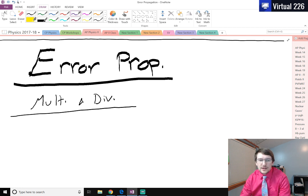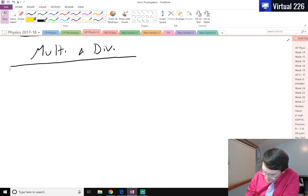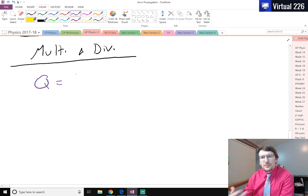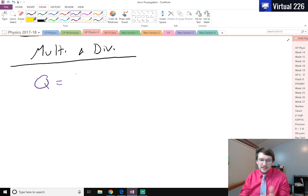Now if we're multiplying or dividing values together, we do some similar things to the addition subtraction and some things change. For what's similar, whenever you find the actual value Q, you just need to multiply and divide all of the measured values together. It's just the traditional math you've always done.